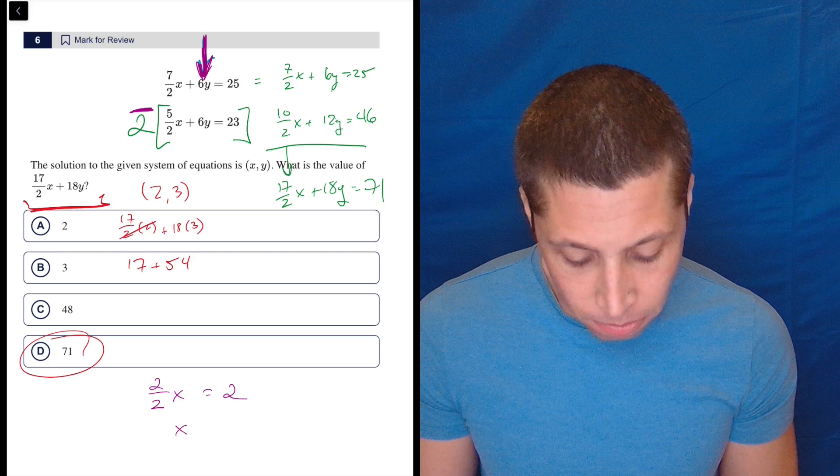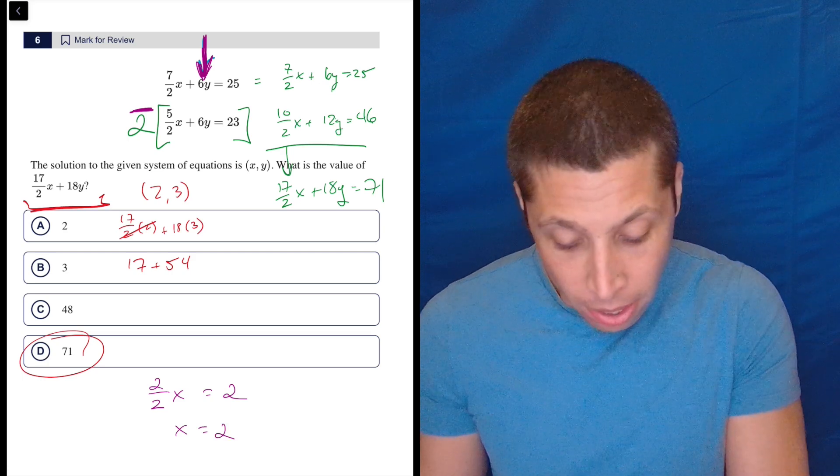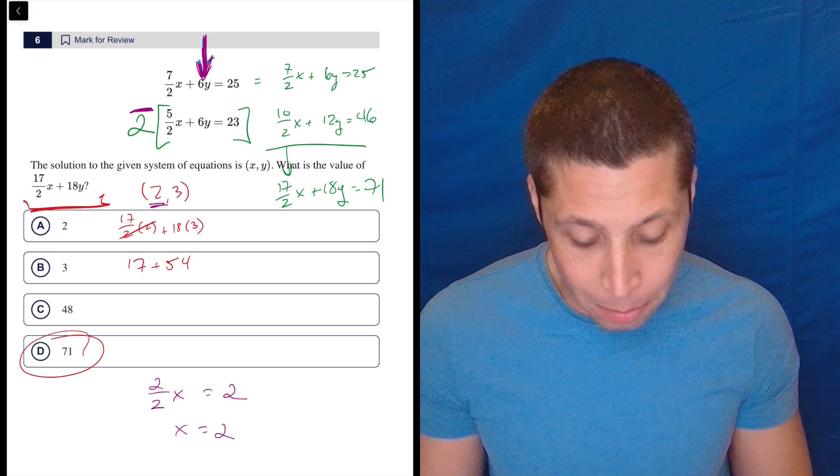2 over 2x is just 1. So x equals 2. That's what we got. I know my 2 is ugly, but that's what we got.